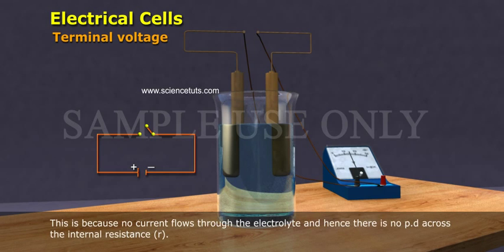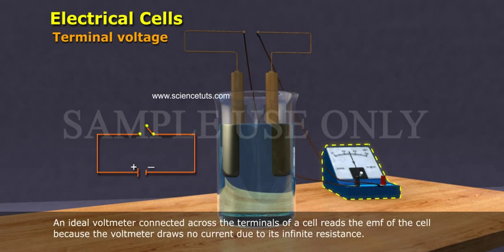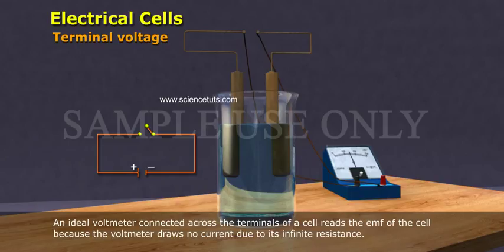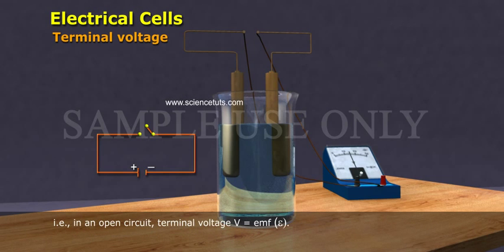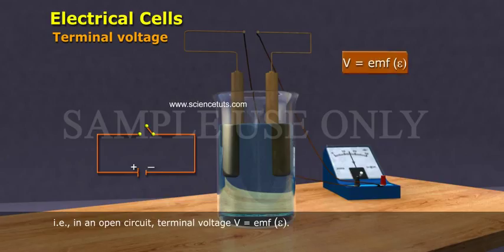This is because no current flows through the electrolyte and hence there is no potential difference across the internal resistance. An ideal voltmeter connected across the terminals of a cell reads the EMF of the cell because the voltmeter draws no current due to its infinite resistance. That is, in an open circuit, terminal voltage V equals EMF epsilon.